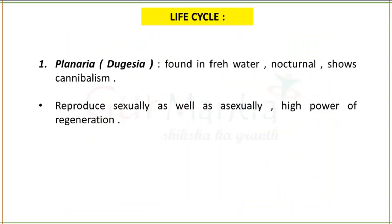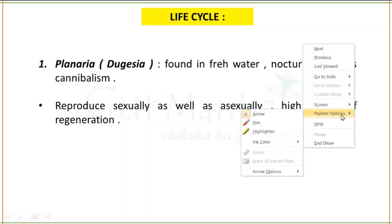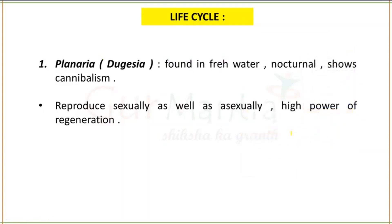Next, if we talk about the life cycle, we will not study the entire life cycle but focus on the hosts and important points. First, we study Planaria or Dugesia. Planaria is found in freshwater and is nocturnal — active at night. It shows cannibalism. It reproduces both sexually and asexually, and shows a high power of regeneration.